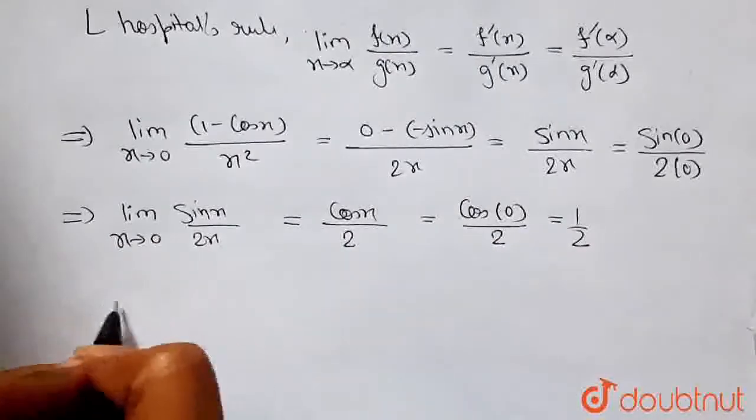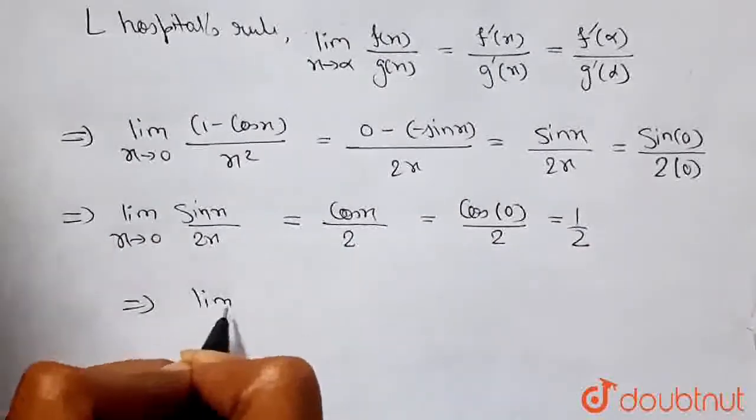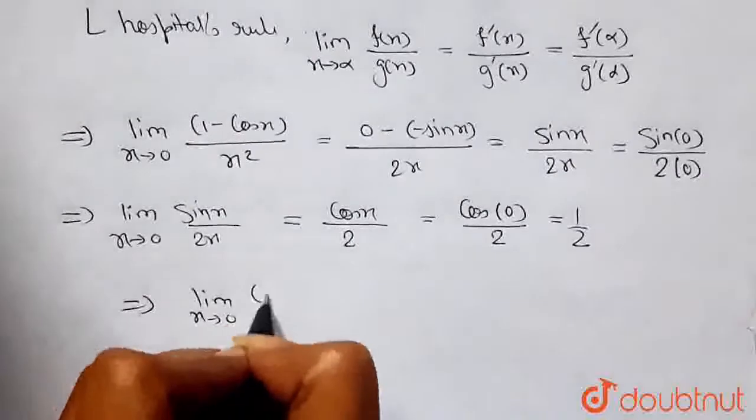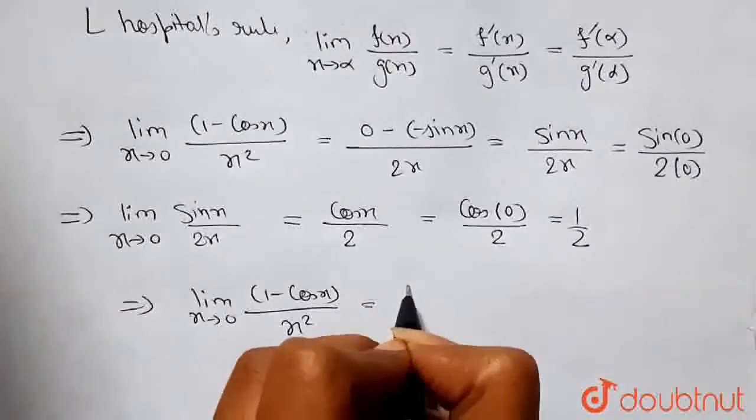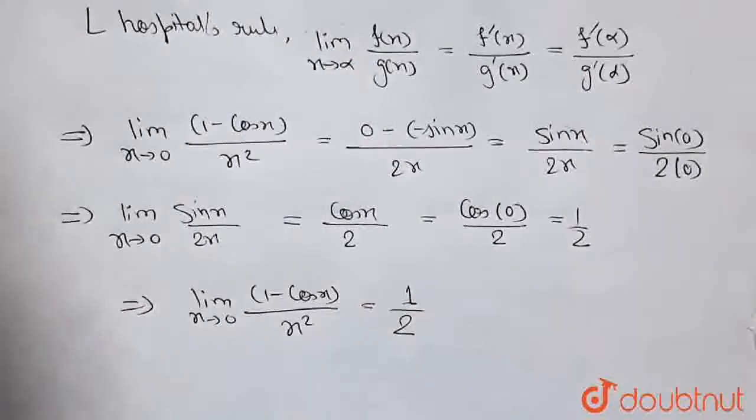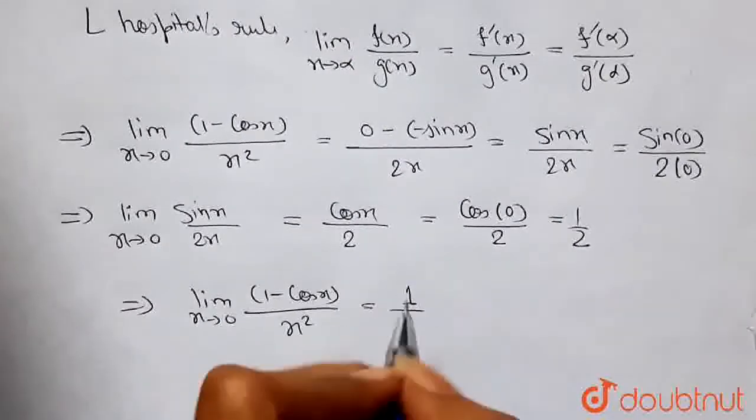So it came out that limit as x tends to 0 of (1 - cos x) divided by x squared is equal to 1/2. I hope this will help you. Thank you so much.